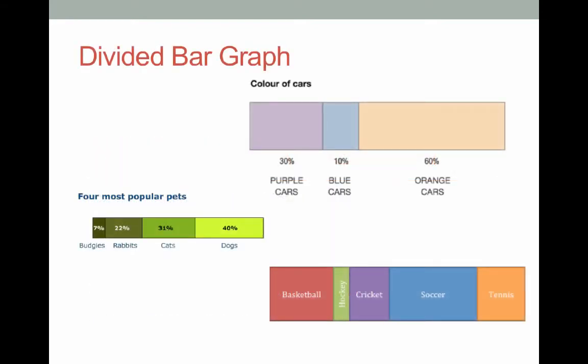So here are some examples of a divided bar graph. It is similar to a sector graph but instead of using a circle we use a rectangle to represent the relative sizes of the things that you've collected data on. As you can see in the first divided bar graph we have some colors of cars and they're represented by percentages underneath them as well as the names of the colors of the cars.